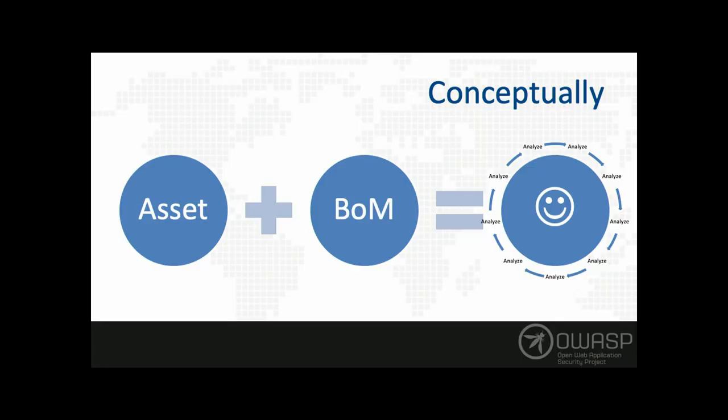This is really important when organizations create software because they typically support multiple versions. You might be at version 3.0 but still have 1.0 in the field that you support but don't build every day. Or you might have hundreds or thousands of microservices — development teams move from one service to the next, so you're not working on all thousand services all the time, but you still need to monitor them.